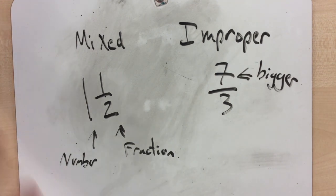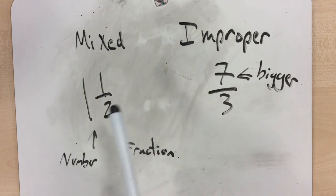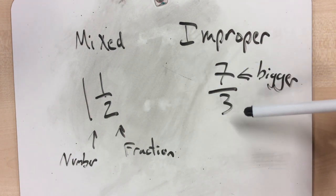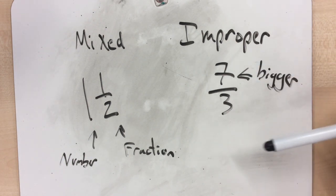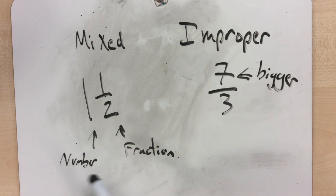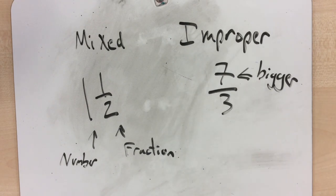We first need to make sure that we understand the difference between a mixed fraction and an improper fraction. A mixed fraction is written with a number and a fraction — so here, 1 and 1 half. An improper fraction is where the numerator, the top number, is bigger than the denominator, the bottom number. So 7 being bigger than 3 means 7 thirds is an improper fraction. Both of these fractions represent numbers that are greater than 1. What we're going to do today is convert one to the other so that we know which mixed fraction is the same as which improper fraction.